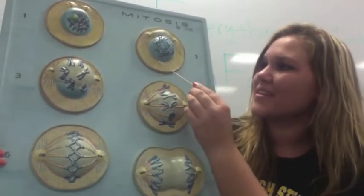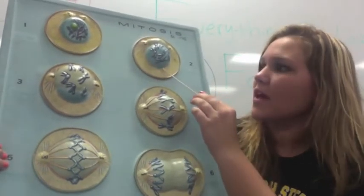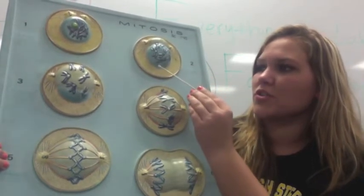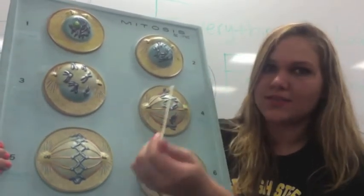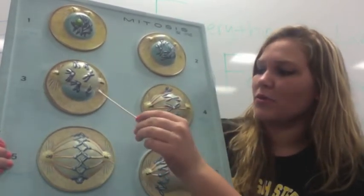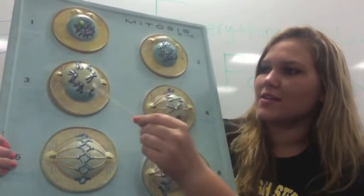All right, so this is the early phase of prophase, and during this phase is where the chromosomes are starting to position—P, position—in the cell, and they're getting ready to be pulled apart by the spindle fibers. So this is early prophase, and this is late prophase.